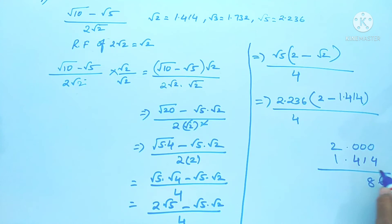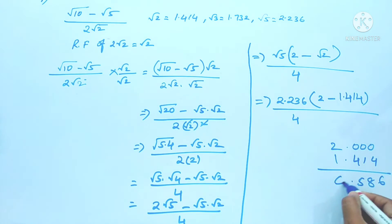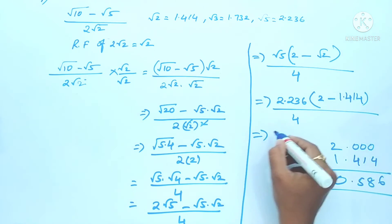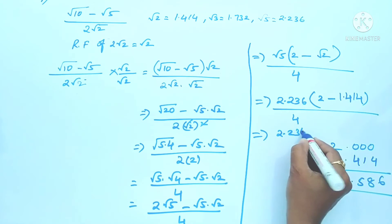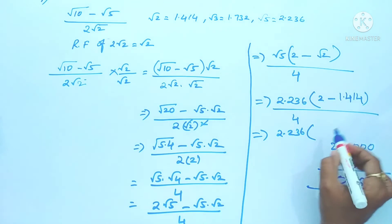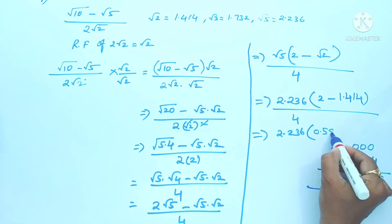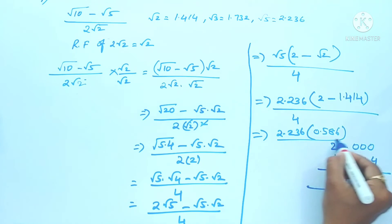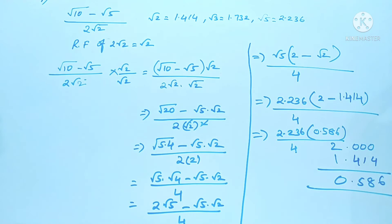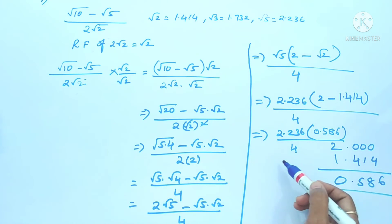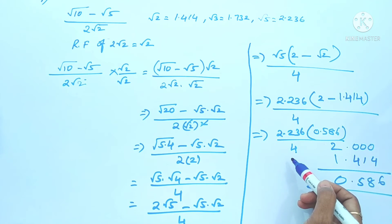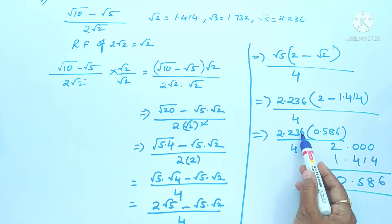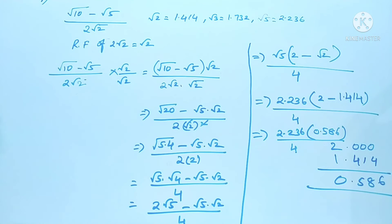There are 3 digits after the decimal, so we align accordingly. 2.000 - 1.414: we get 0 - 4, borrow to get 10 - 4 = 6; 9 - 1 = 8... wait, 0 - 1 borrow gives 10 - 4 = 6, then 9 - 1 = 8... the result is 0.586. So we have 2.236 × 0.586 / 4.